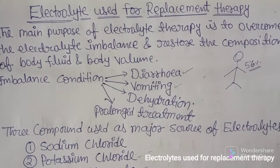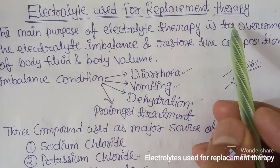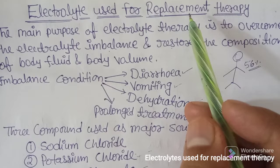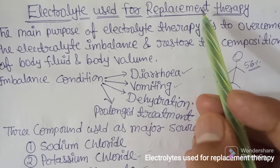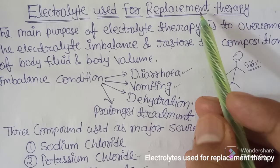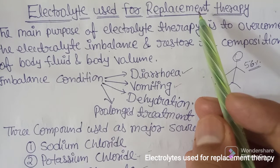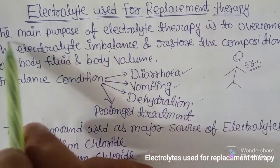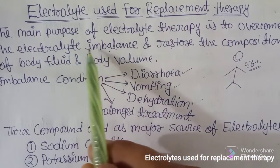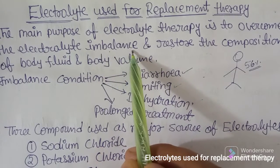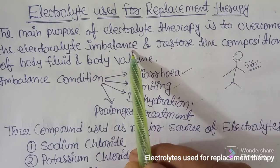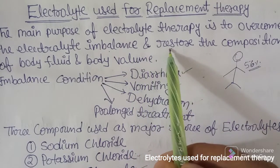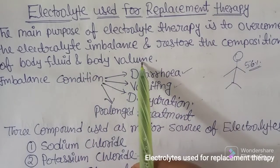We are going to discuss the electrolytes used for replacement therapy. There are electrolytes which can be used for replacement when a patient is running with a deficiency of electrolytes. Whatever the major extra and intracellular electrolytes we have discussed, if their balance is imbalanced, the person needs those electrolytes for replacement. The main purpose of electrolyte therapy is to overcome the electrolyte imbalance and to restore the composition of body fluid and the body volume both.